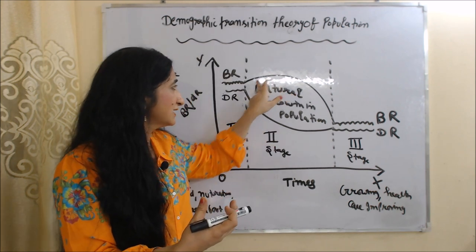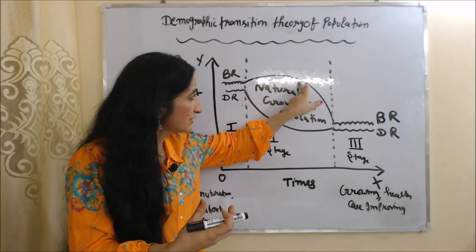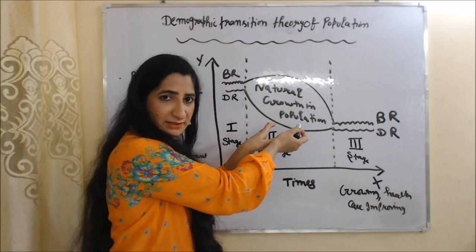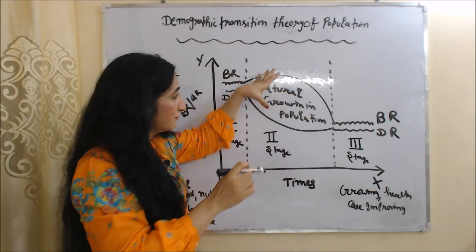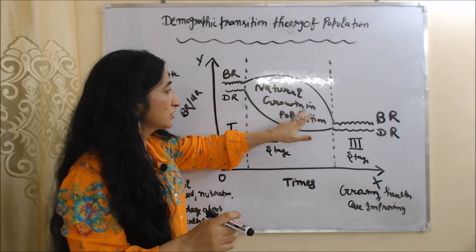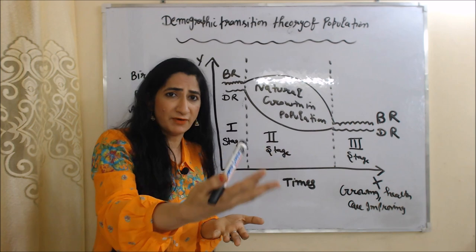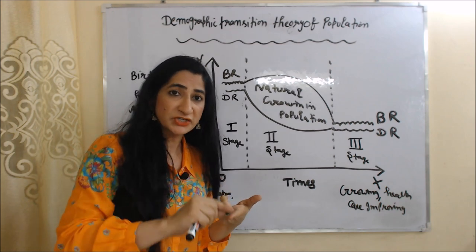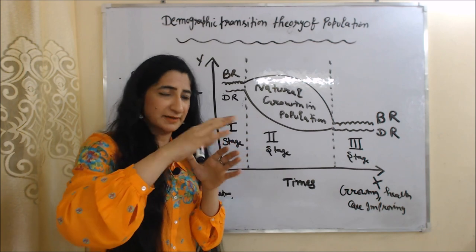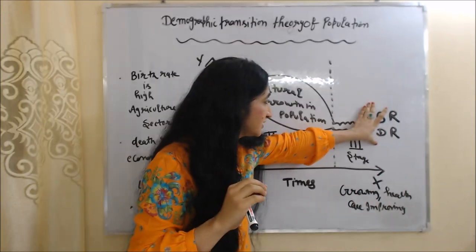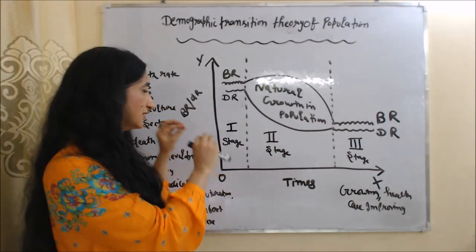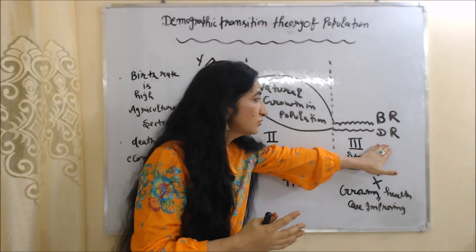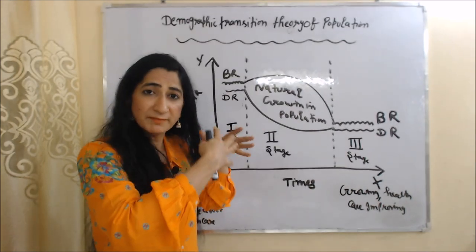During the second stage, initially birth rate and death rate are high, but after a certain time period both start declining. Death rate declines faster than birth rate, so overall birth rate remains higher than death rate — the difference between them is called natural growth in population. Death rate declines faster because people are getting proper food, nutrition, and medical services. During the third stage, both birth rate and death rate become very low, showing how population transitions from high birth and high death to lower birth and lower death as we become more industrialized.